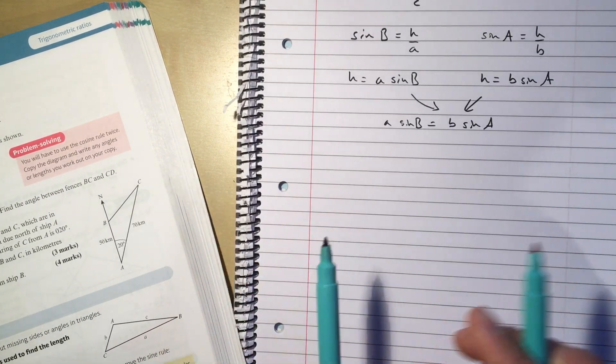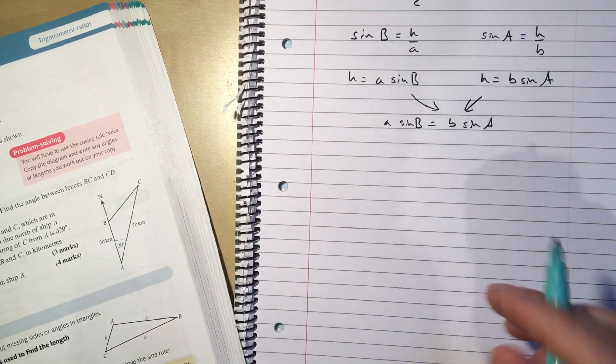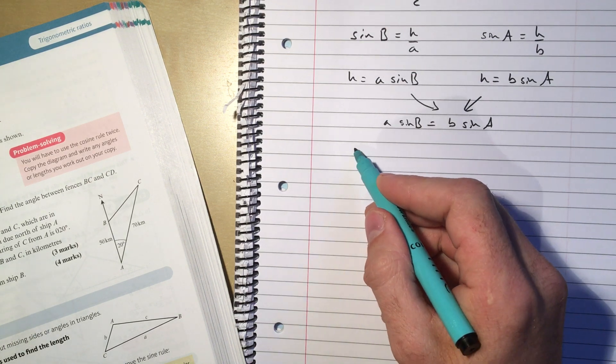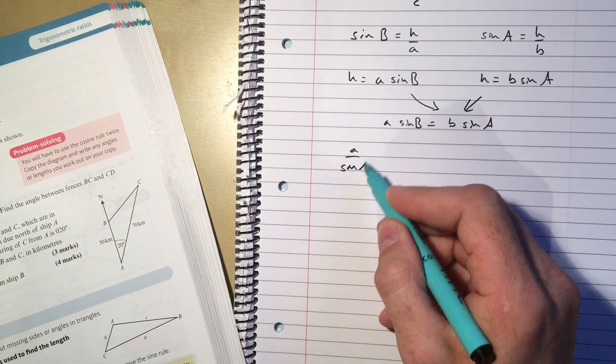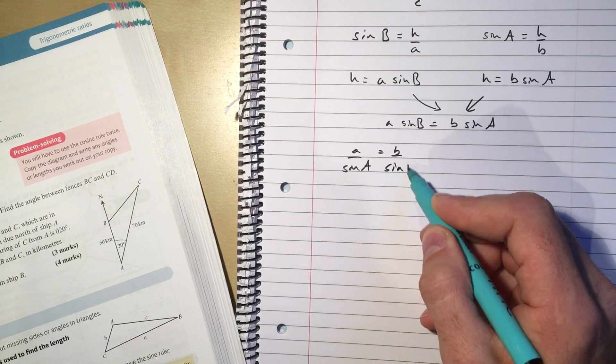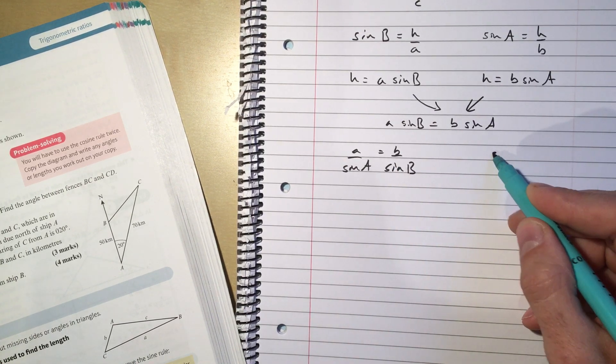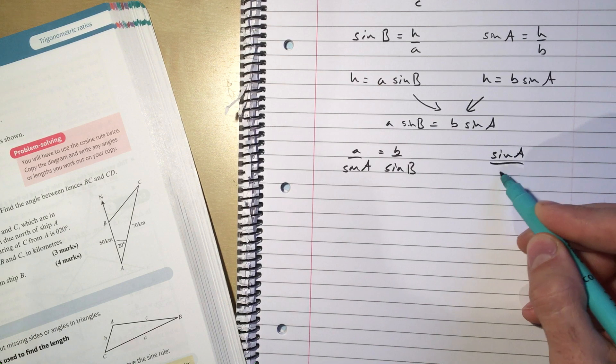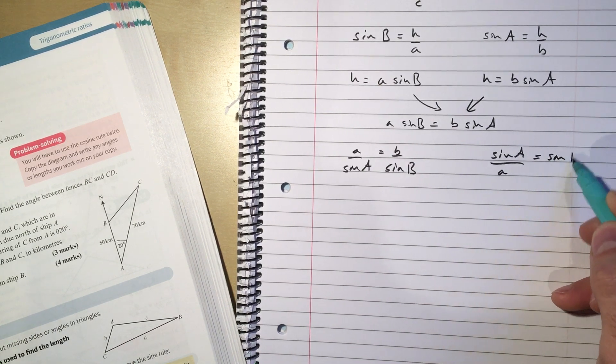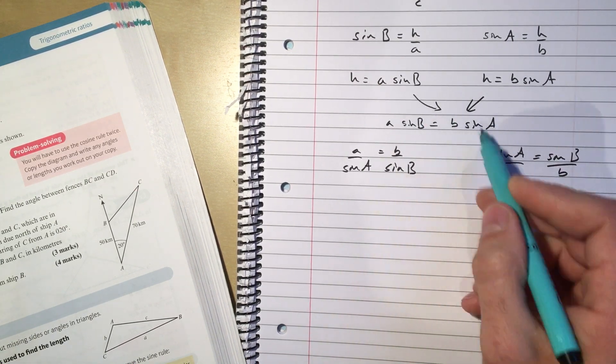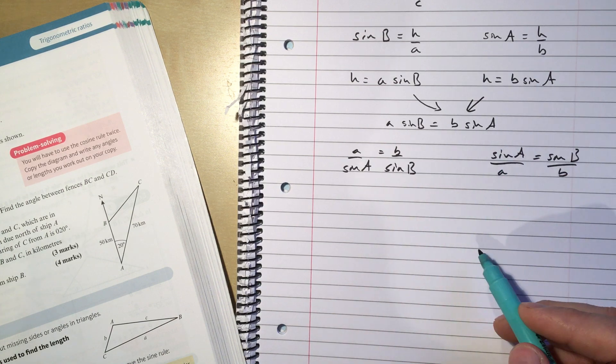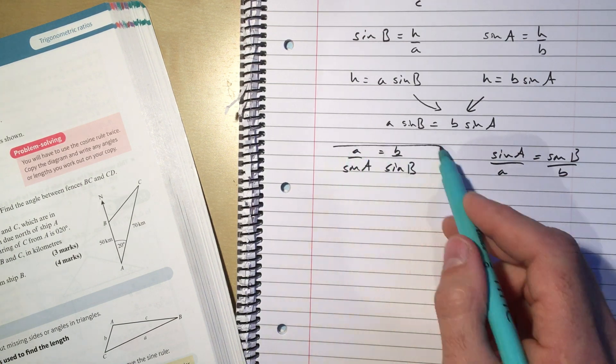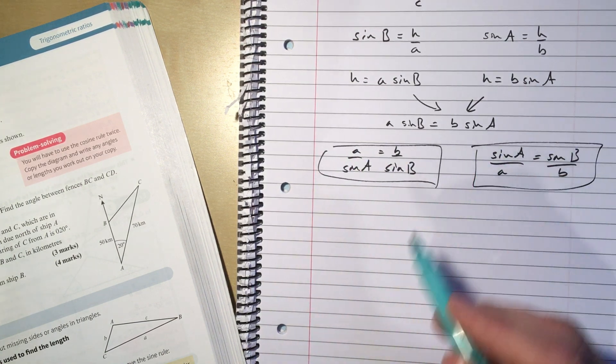Now in a way that might be a more useful version of the sine rule to work with because what we tend to do is write it like this or like this. And you can see that both of those come from here just depending on what we divide through by. So we get this version of the sine rule and this version of the sine rule.